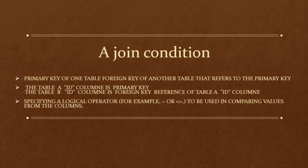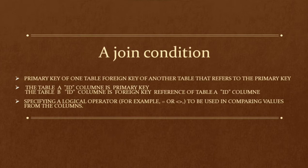A join condition uses the primary key of one table and the foreign key of another table that refers to the primary key. For example, table A's ID column is a primary key and table B's ID column is a foreign key referencing table A's ID column. A logical operator, such as equal to or not equal to, is used to compare values from the columns.